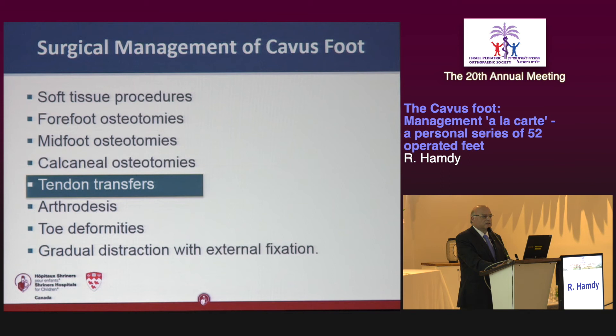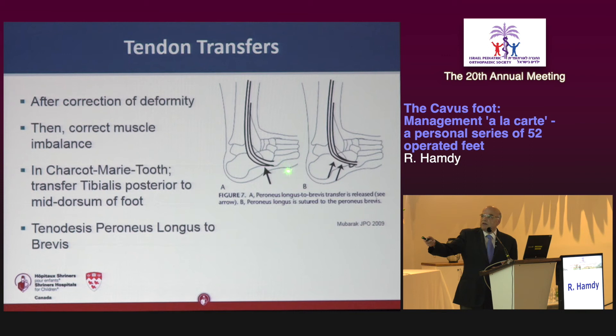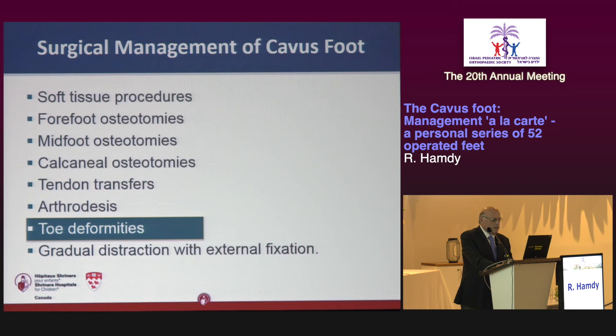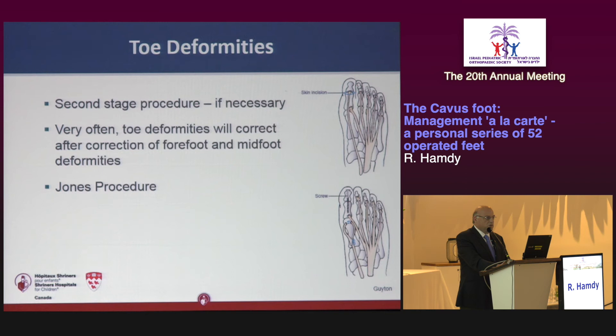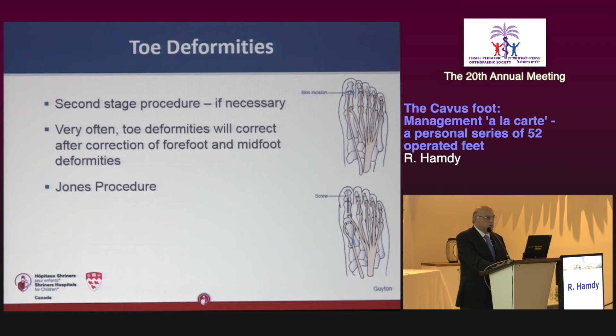For tendon transfer, after addressing everything else, you address the muscle balance: tenotomize the peroneus longus to the brevis, and transfer the tibialis posterior completely through the interosseous membrane. For toe deformities, you can do them at the same setting or as a secondary procedure. I prefer the secondary setting because very often the toe deformity corrects after all the releases. The standard procedure is the Jones procedure, which should be done in all toes.